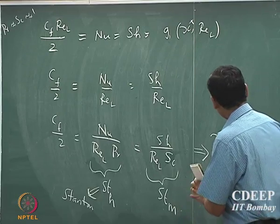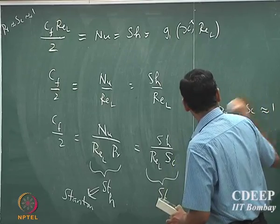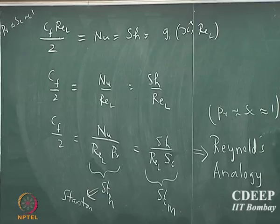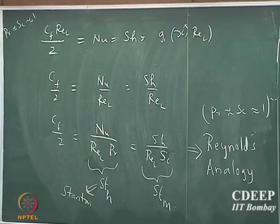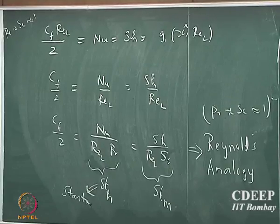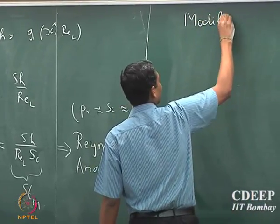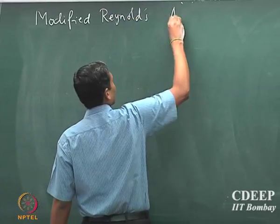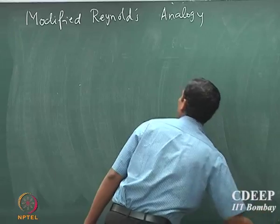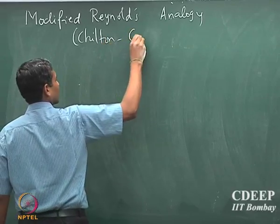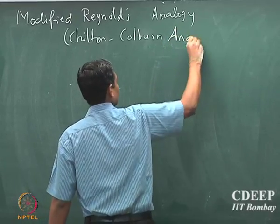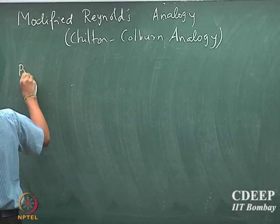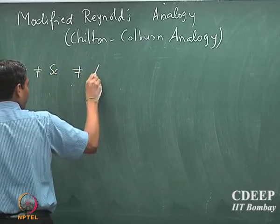Now, remember that this Reynolds analogy is valid only when Prandtl and Schmidt numbers are approximately equal to 1. Real systems are obviously not the case — Prandtl and Schmidt are not equal to 1 because we are not always looking at dilute gases. That requires us to move to the next topic, which is the modified Reynolds analogy, also called the Chilton-Colburn analogy.